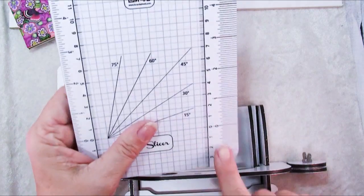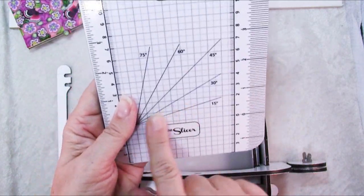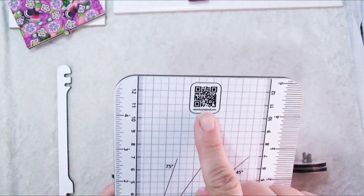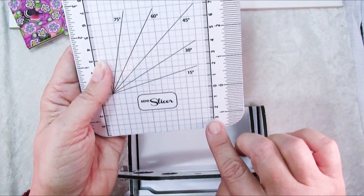And so I like to use millimeter measurements. So I'm going to slide this in with the words Mini Slicer facing me rather than the code here so that I've got the millimeters right here.